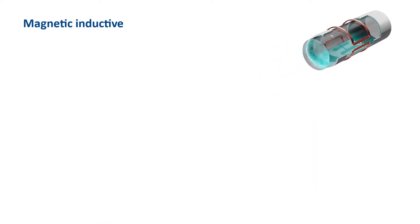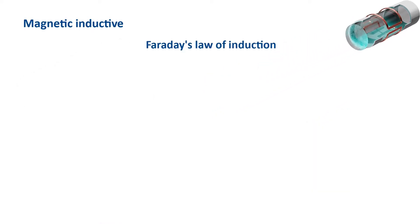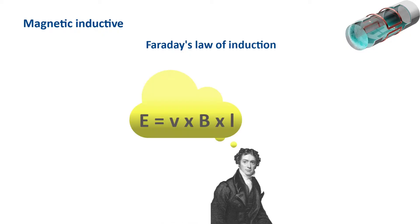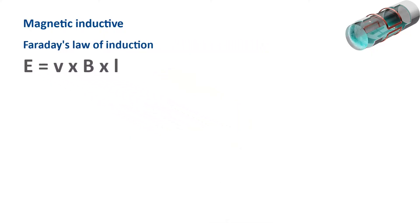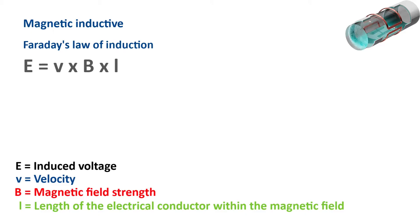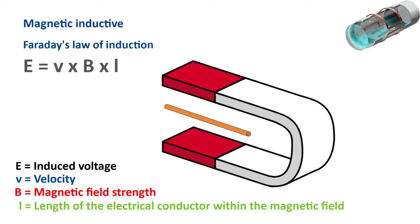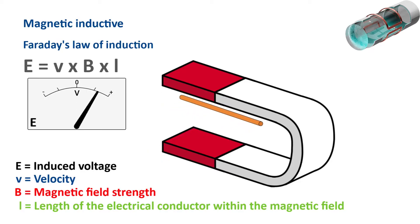The magnetic inductive sensor works according to Faraday's law of induction. This states that when an electrical conductor moves through a magnetic field, a voltage is generated in it. This voltage is proportional to the speed of the electrical conductor in the magnetic field. The induced voltage depends on the length of the electrical conductor, the magnetic field strength, and the speed of the conductor. The polarity of the voltage depends on the direction of movement of the conductor.